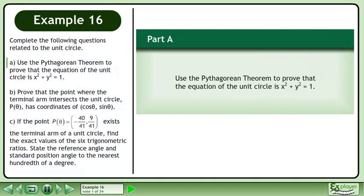Complete the following questions related to the unit circle. Use the Pythagorean theorem to prove that the equation of the unit circle is x squared plus y squared equals 1.